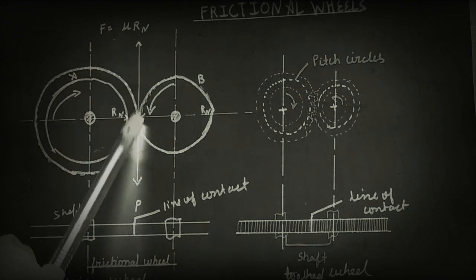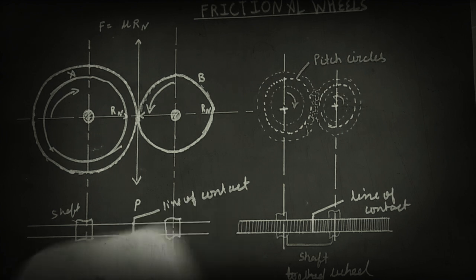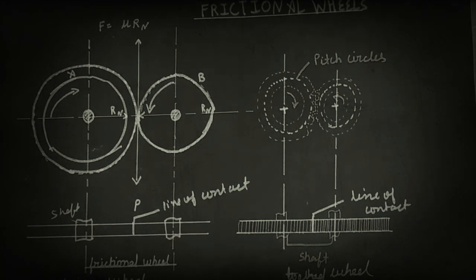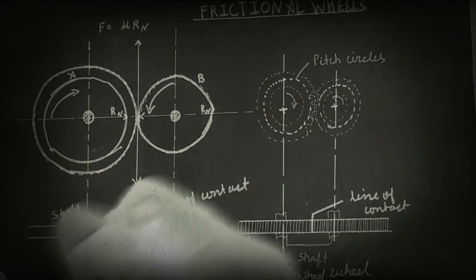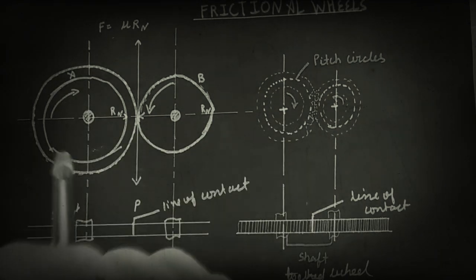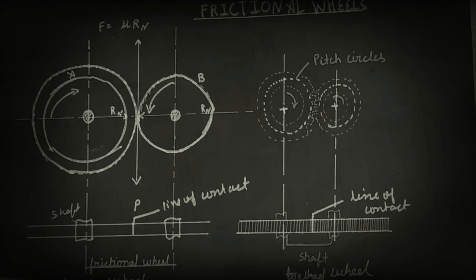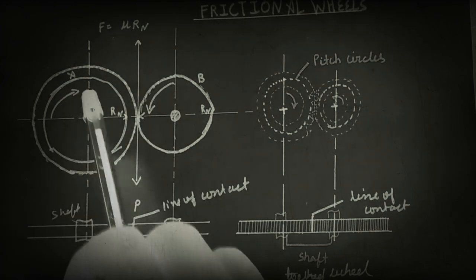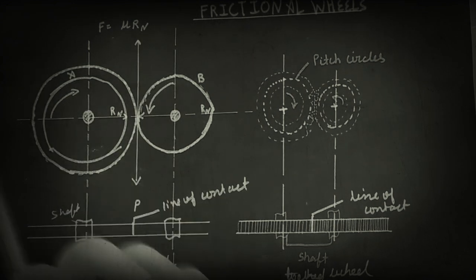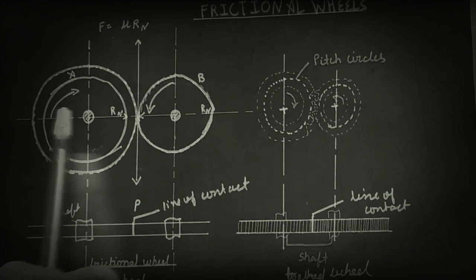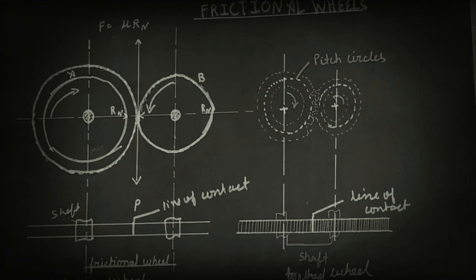When the tangential force is more than the friction force, slipping occurs between them. The slipping exists because the surface has no projection and the teeth cannot grip. If the speed or tangential force is too high, this drawback occurs.